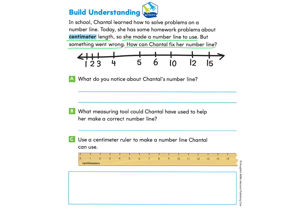How can Chantel fix her number line? So here we see that Chantel made a number line 1, 2, 3, 4, 5, 6, 10, 12, 15.